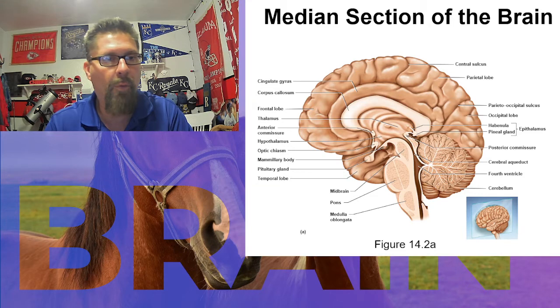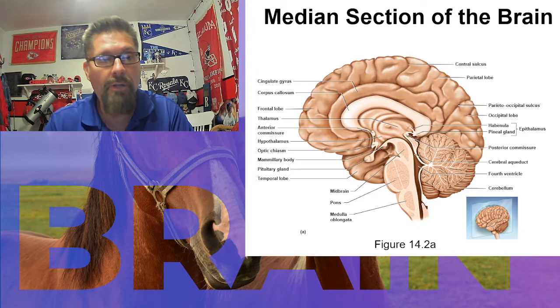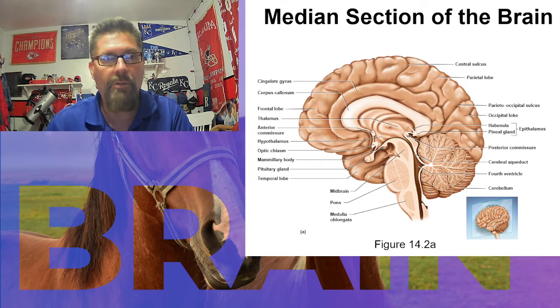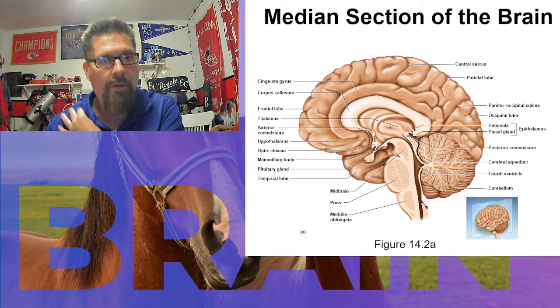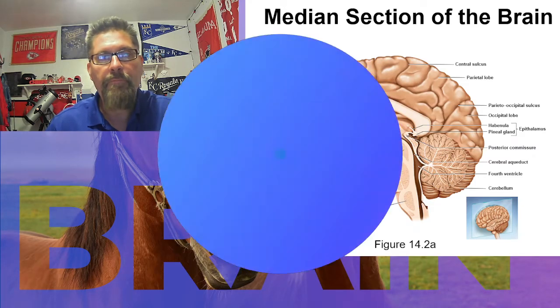Those three structures — the thalamus, hypothalamus, and pituitary gland — make up a huge portion of the endocrine system, which plays a major part in keeping everything in homeostasis. That's our video on brain general information. Next time we'll talk about gray and white matter.